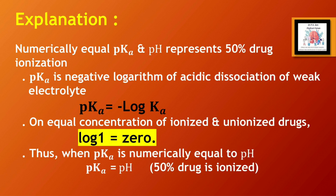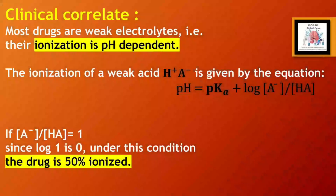pKa is the negative logarithm of the acid dissociation constant of a weak electrolyte. At equal concentrations of ionized and un-ionized drug, log 1 equals 0. Thus, when pKa is numerically equal to pH, 50% of the drug is ionized. The ionization of a weak acid is given by: pH = pKa + log(concentration of ionized acid / concentration of un-ionized acid). If the ratio of ionized to un-ionized acid equals 1, since log 1 is 0, the drug is 50% ionized under this condition.